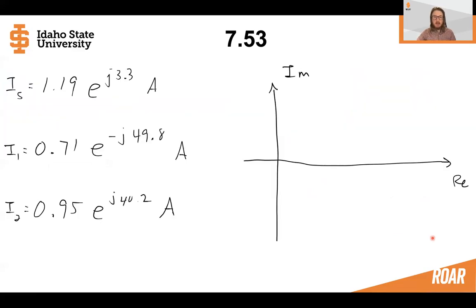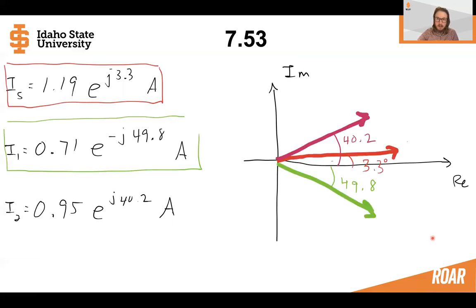Let's plot these on a phasor diagram and find the absolute diagram. Plotting all three of these, we can see that IS is just above the real axis, 3.3 degrees. I2 is 40.2 degrees above the real axis. And I1 is 49.8 degrees below the real axis.